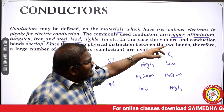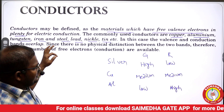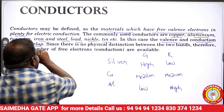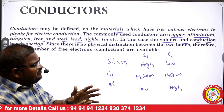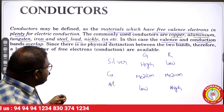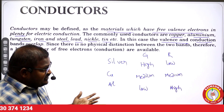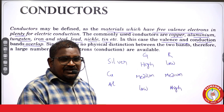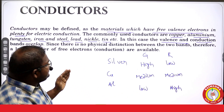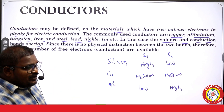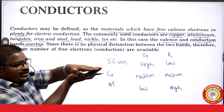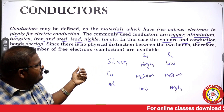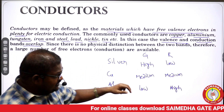In conductors, the valency band and conduction band are overlapping. Since there is no physical distinction between the two bands, a large number of free electrons are available. Because the valency band and conduction band overlap, we cannot discriminate between them, and therefore a large number of free electrons are available for conduction.